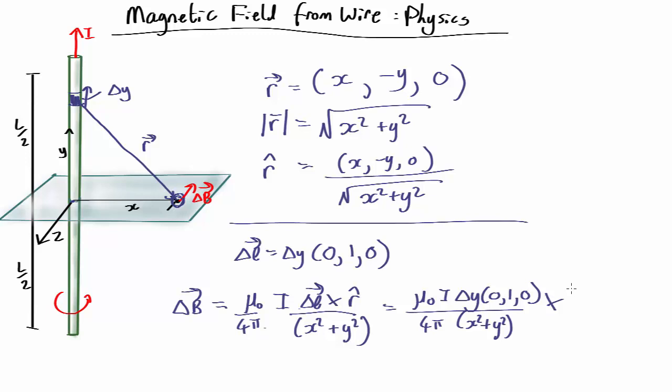And then we take the cross product with my unit vector, which is (x, minus y, 0) over root x squared plus y squared.